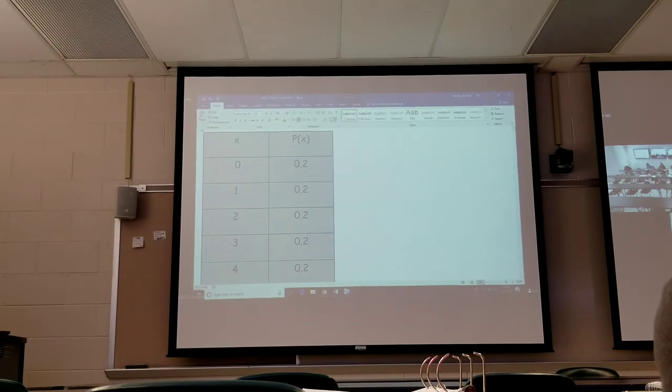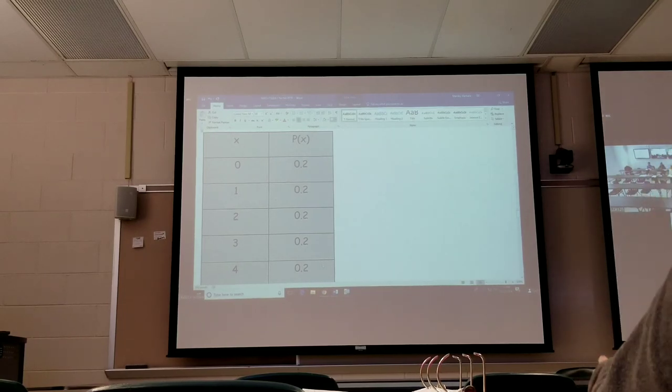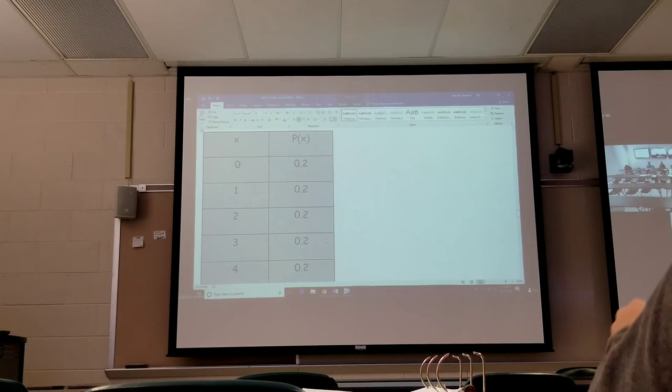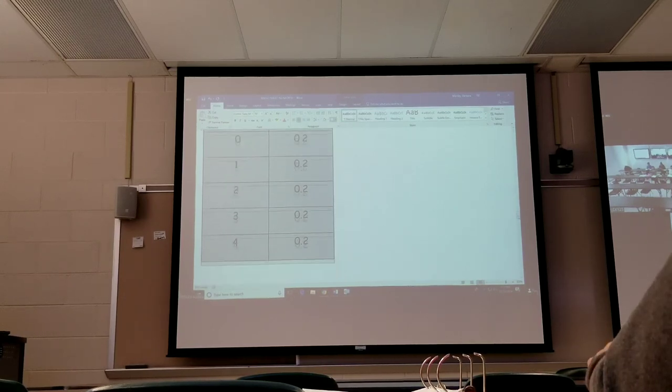What I do is I look at the probability column. If all of these are positive, we're okay there. Then I want to see if they're greater than 1. These are all between 0 and 1, so rule 1 checks. If I add those probabilities up, I get exactly 1, so rule 2 checks.